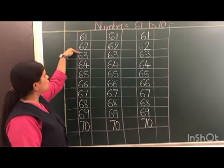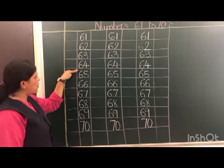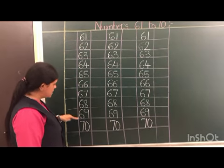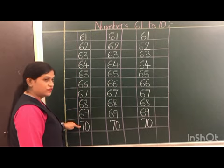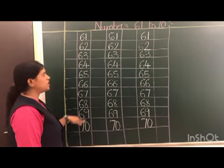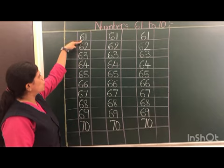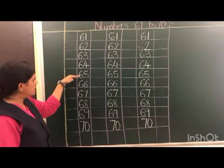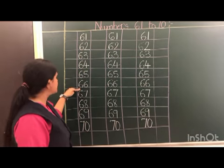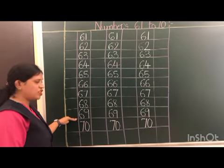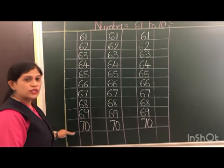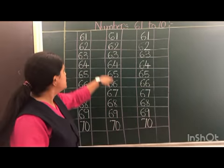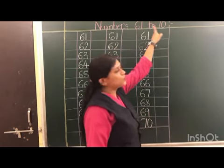61, 62, 63, 64, 65, 66, 67, 68, 69, 70. We will repeat again: 61, 62, 63, 64, 65, 66, 67, 68, 69, 70. So today you have learned numbers from 61 to 70.